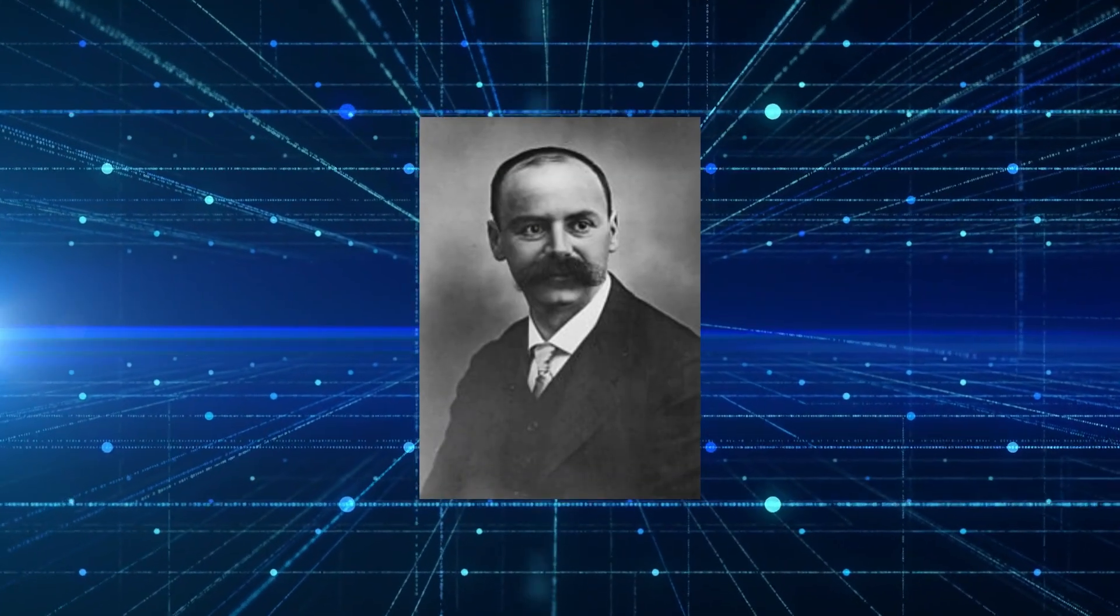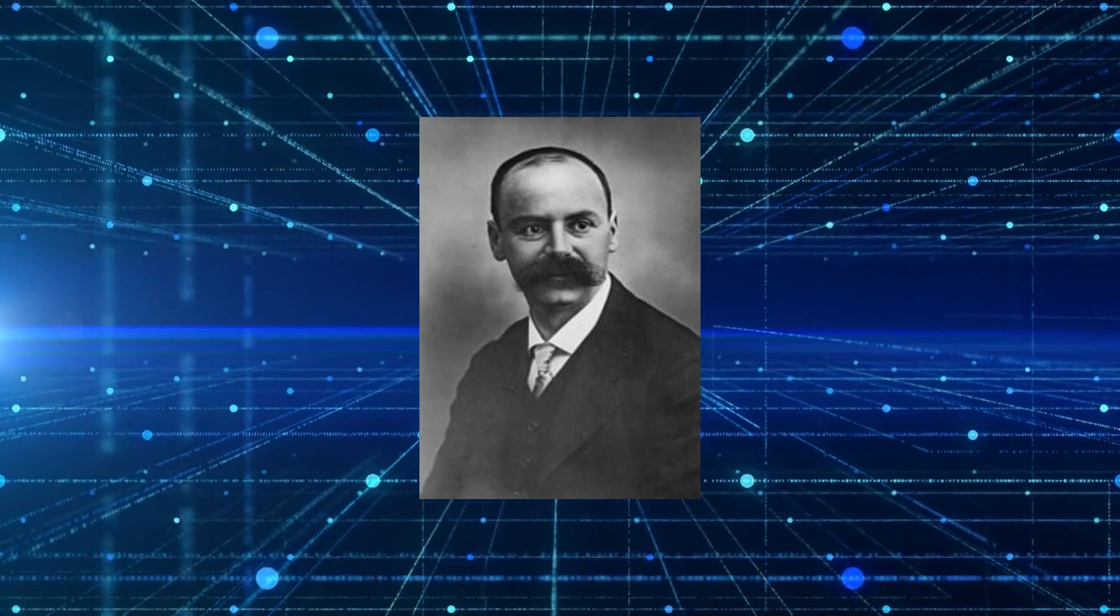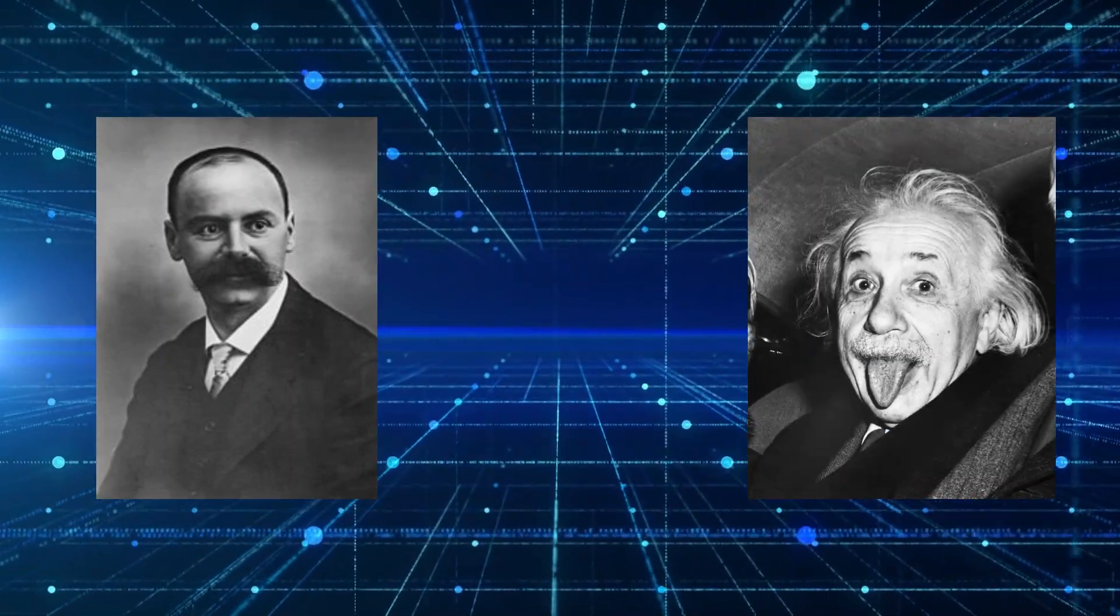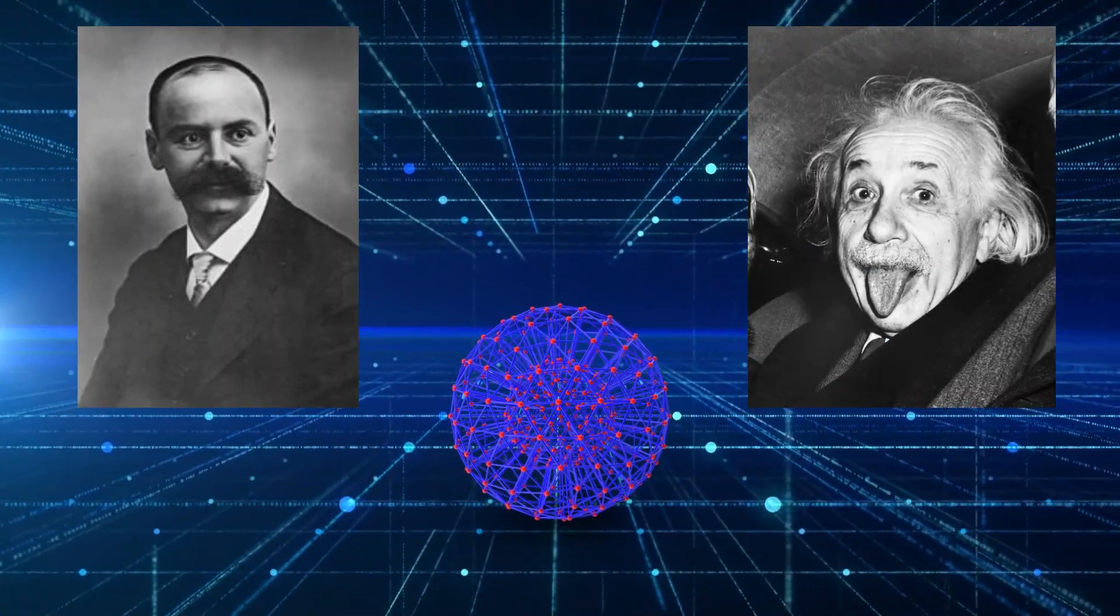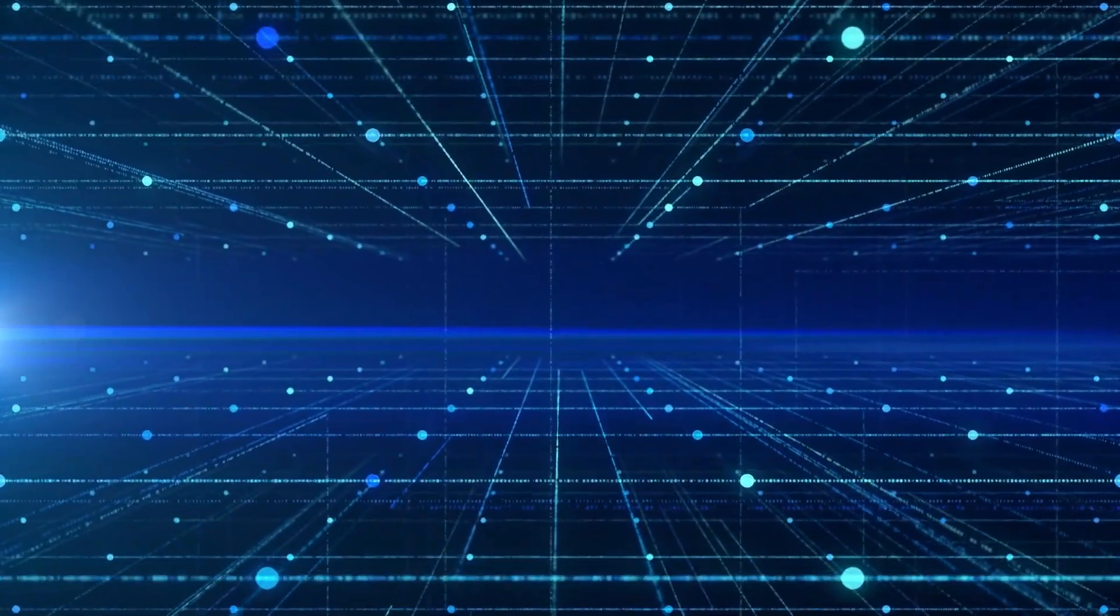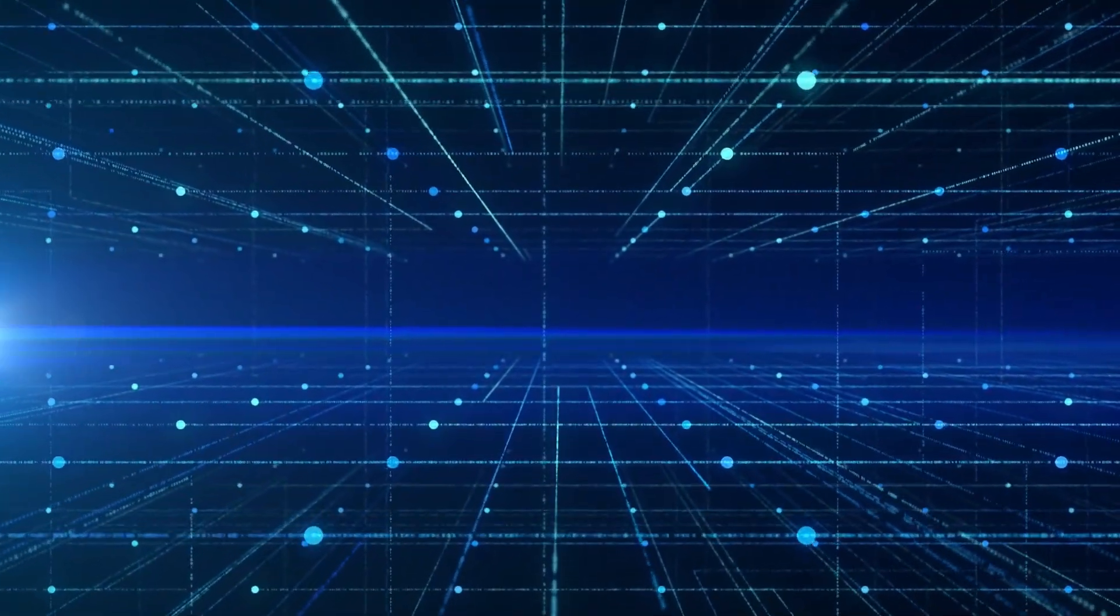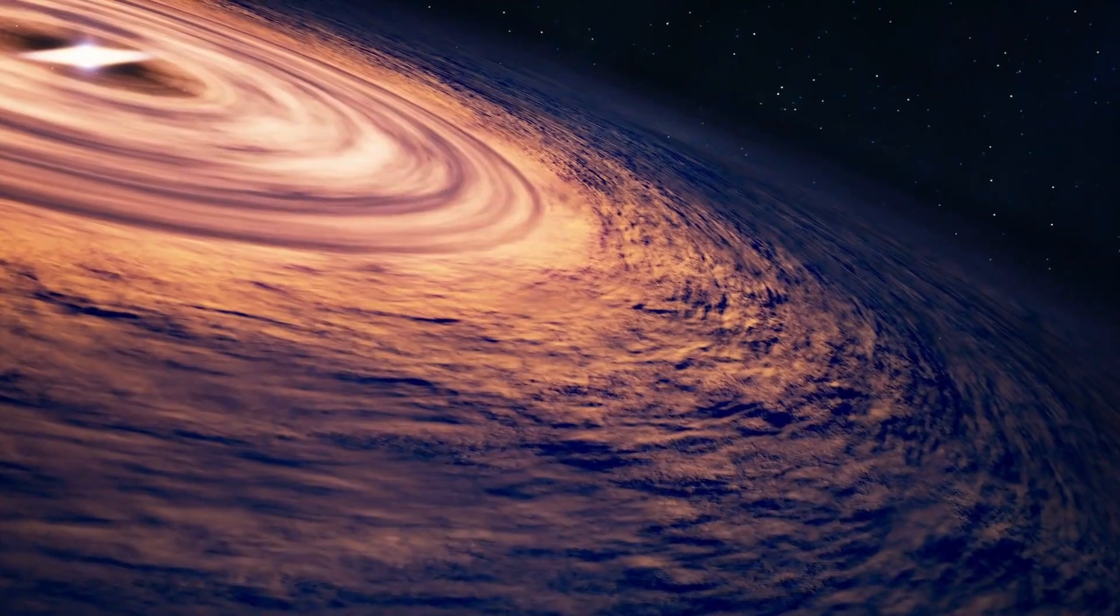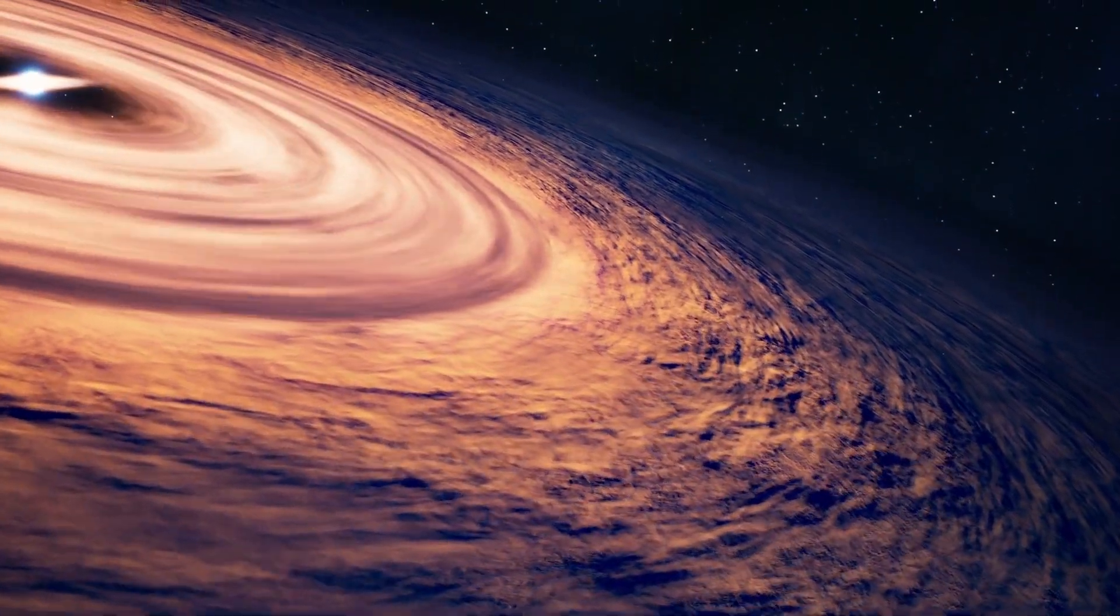Just one year later, the German physicist Carl Schwarzschild used Einstein's equations to describe the existence of objects with such a strong gravitational force that nothing, not even light, can escape them. These objects later became known as black holes.